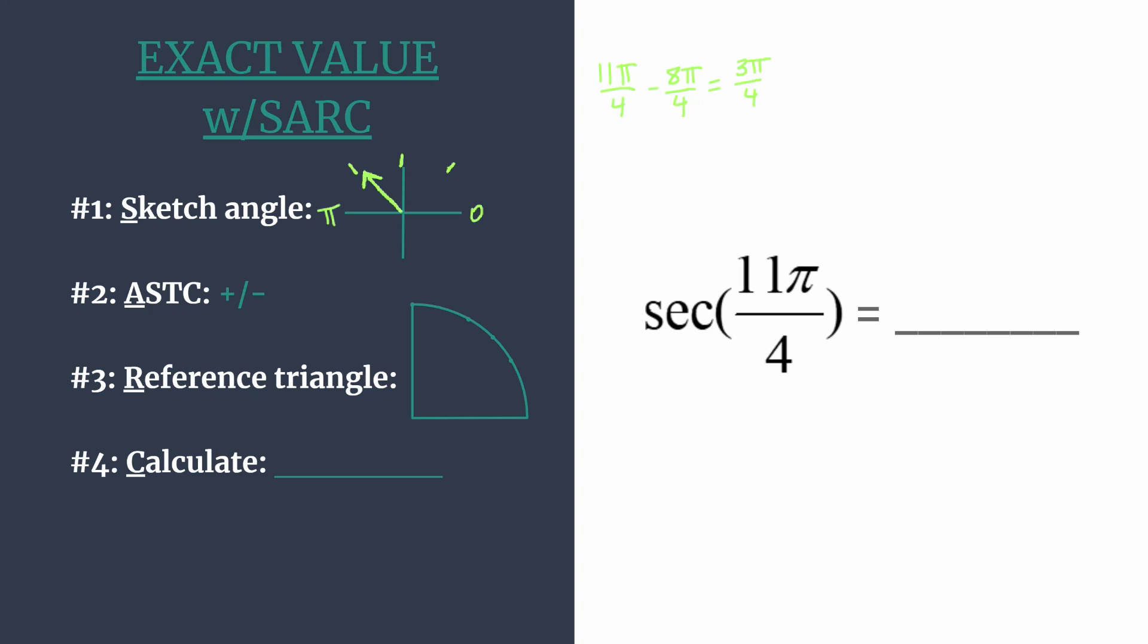Second, we're going to use ASTC to determine which trig functions are positive or negative in each quadrant. ASTC, think all students take classes, will tell us which ones are positive. And of course, all the others are negative.